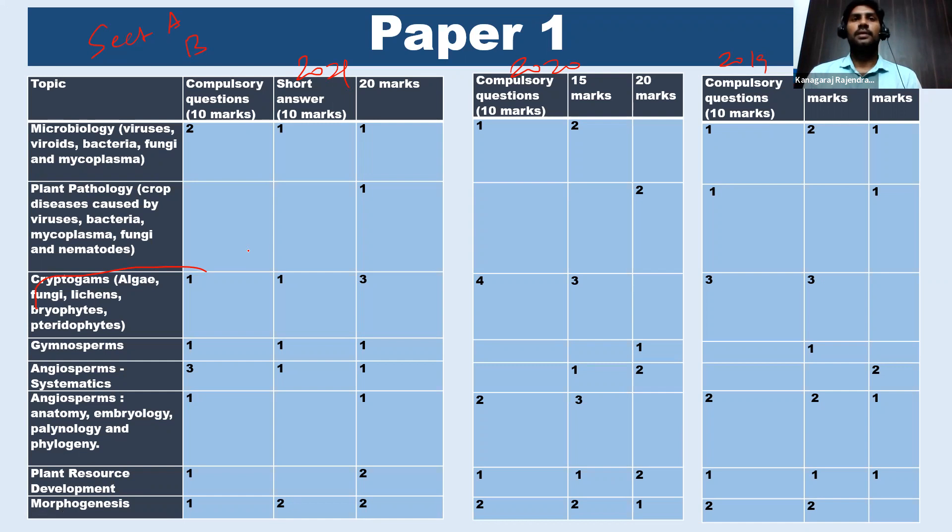So in section A, more number of questions are from the cryptogams—the compulsory questions and big questions. And again, angiosperms very important. So we can find from the taxonomy area plus the anatomy embryology, more number of questions from angiosperms. They are common to both section A and section B. And the last two topics, plant resource development and morphogenesis, so the morphogenesis topic is about tissue culture, those areas.